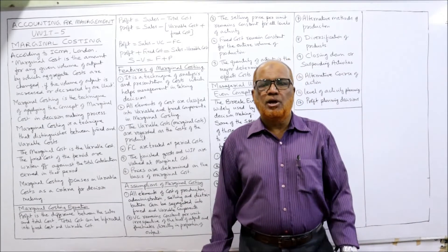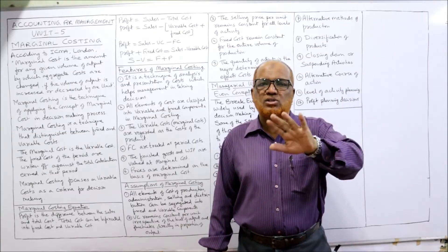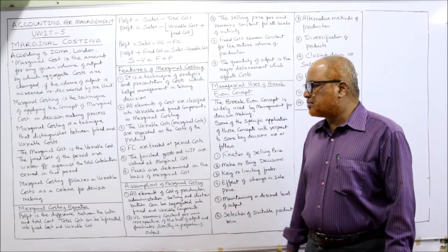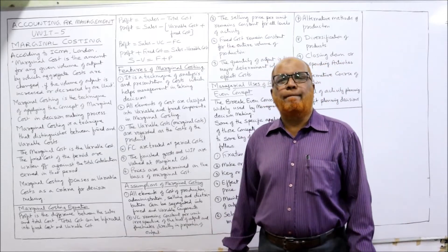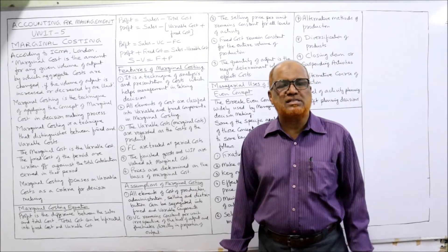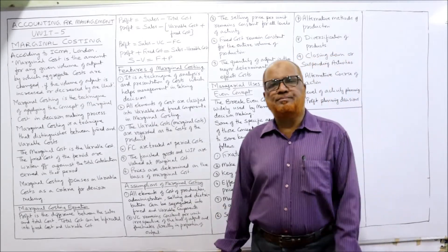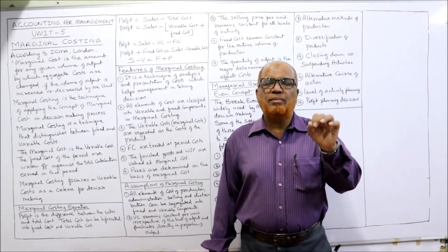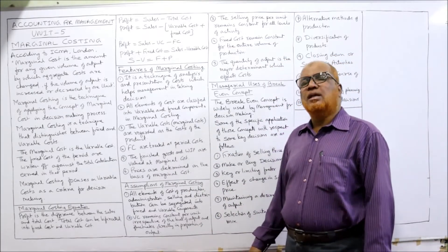Product cost means the cost incurred to produce goods — that is variable cost. Period cost is the cost not related to production but to time. The third feature: fixed costs are treated as period costs, related to time period — monthly, per annum, etc. The fourth feature: finished goods and work-in-progress are valued at marginal cost. The fifth feature: prices are determined on the basis of marginal cost — marginal cost is very helpful in fixing the selling price.